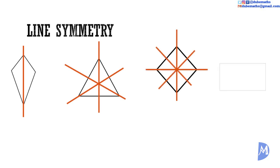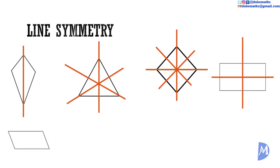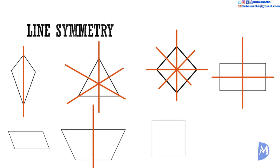The rhombus has four lines of symmetry. The rectangle has two. The parallelogram has zero lines of symmetry. The trapezium has one line of symmetry. The square has four lines of symmetry.